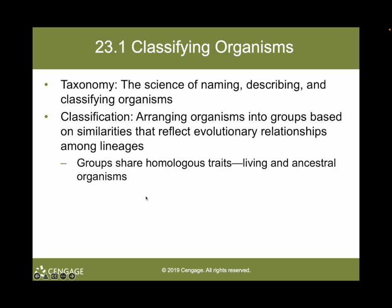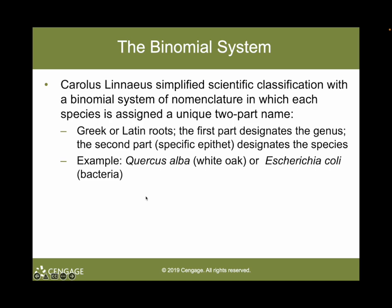This work involves some careful investigations as we attempt to determine the patterns of relationships. In the mid-18th century, Carlos Linnaeus developed a system of naming organisms to allow scientists to communicate more clearly. Before the mid-18th century, each species had a lengthy descriptive name, sometimes consisting of 10 or more Latin words. Linnaeus simplified scientific classification and developed the binomial system of nomenclature — that two-part name — in which each species is assigned a unique two-part name.